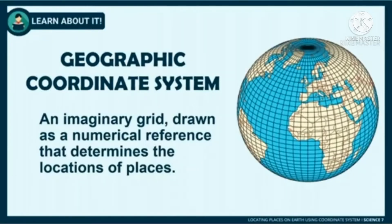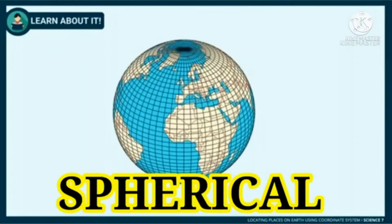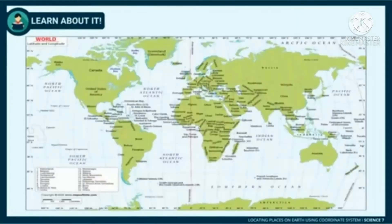Locating places on a map or globe uses these lines which are represented as degrees, since it is assumed that the world is spherical. Most maps usually draw these lines apart at a 15 degree interval.